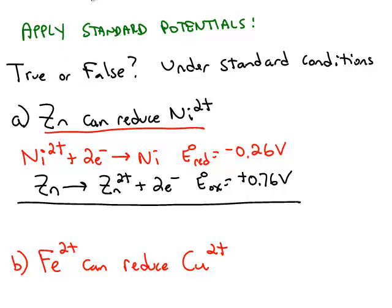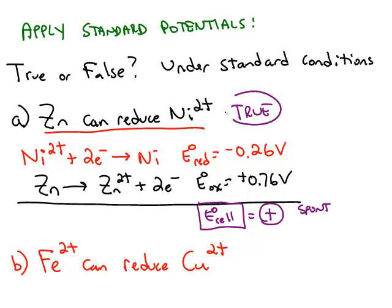If you take this reduction and this oxidation, the key question is what kind of reaction do you get? And that is answered by what kind of number you get for the cell voltage. The only thing that matters for a question like this is whether the answer is going to be positive or negative. And negative 0.26 plus positive 0.76 is going to give you a positive answer. So because this is positive, that means it's spontaneous, and that means the original question is true.